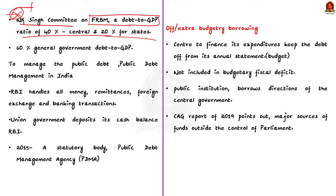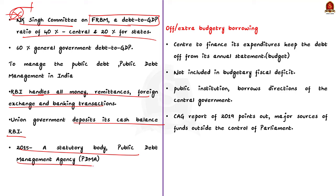As per the RBI Act 1934, the Reserve Bank is both the banker and public debt manager for the Union Government, handling money, remittances, foreign exchange, and banking transactions on behalf of the government. In 2015, the creation of a statutory body called Public Debt Management Agency was envisaged. Presently, we have a Public Debt Management Cell as an interim arrangement before setting up an independent statutory debt management agency.